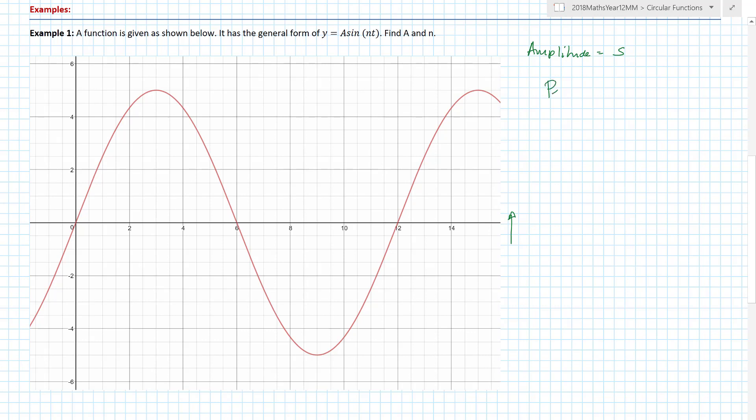Now the period of a graph is given by 2π over n. Well we know the period here, luckily this has been given in terms of radians, so we know the period is 12. So 2π over n, swap those over gives me n is 2π over 12 which gives me π on 6.